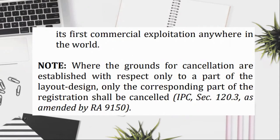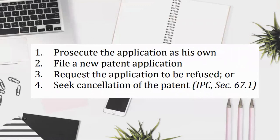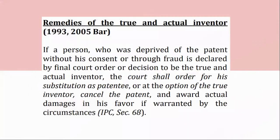Remedy of the true and actual inventor: if a person other than the applicant is declared by final court order or decision as having the right to a patent, he may within 3 months after such decision has become final: (1) prosecute the application as his own; (2) file a new patent application; (3) request the application to be refused; or (4) seek cancellation of the patent. IPC, Section 67.1. If a person who was deprived of the patent without his consent or through fraud is declared by final court order to be the true and actual inventor, the court shall order for his substitution as patentee, or at the option of the true inventor, cancel the patent, and award actual damages in his favor if warranted by the circumstances. IPC, Section 68.